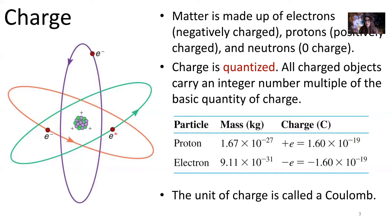An object is neutral if it has the same amount of negative charge as it does positive charge. Now charge is quantized. That means you cannot have half a charge, you cannot have three quarters of a charge, you can only have an integer number of charges. So all charged objects carry an integer number multiple of our basic quantity of charge.